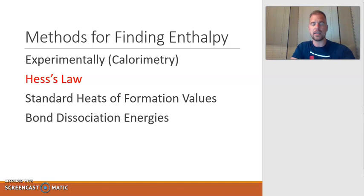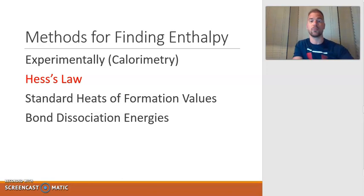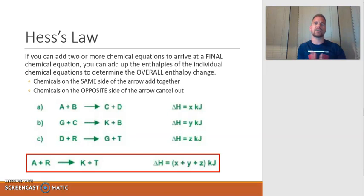The good news is that so many experiments have been done repeatedly that we actually have a lot of data available to us as scientists. What we can do now is use that data to calculate enthalpy in other ways. There are three remaining ways we're going to calculate enthalpy: Hess's law, standard heats of formation, and bond dissociation energies. Starting off with Hess's law — it's actually one of my favorites because they're kind of like little puzzles.